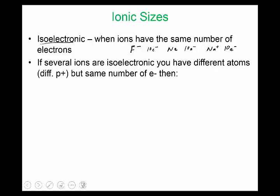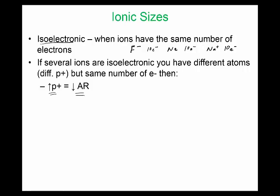If several ions are isoelectronic — meaning you have different atoms with different proton numbers but the same number of electrons — then the following is true: the more protons you have, the smaller the radius.